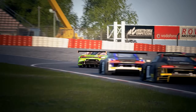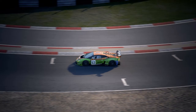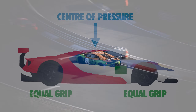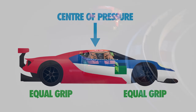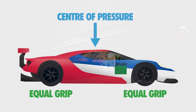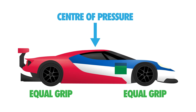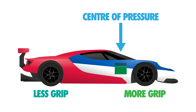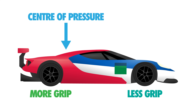Wings are also a useful tool to adjust the centre of aerodynamic pressure. This can be thought of much in the same way as the balance of grip, in that a car with a centre of pressure more towards the front will provide more grip to the front tyres, and vice versa.